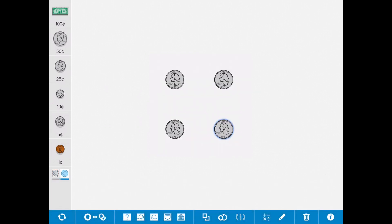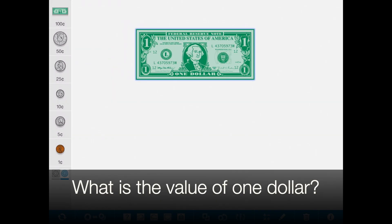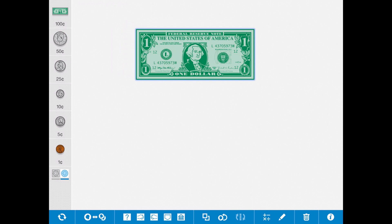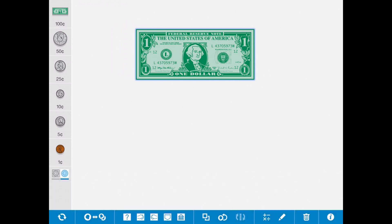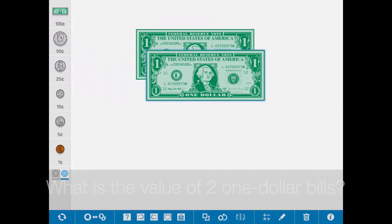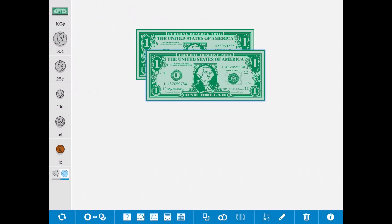Now let's try it with some dollar bills. What is the value of one dollar? It's one dollar, or one hundred cents. Now if I have two one dollar bills, what's the value now? Two dollars.